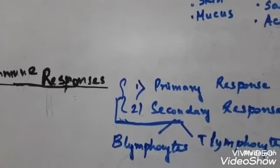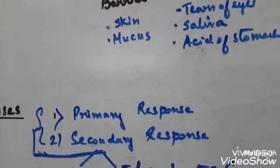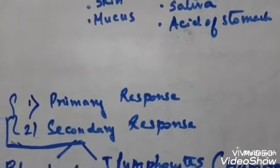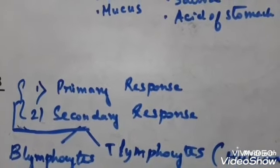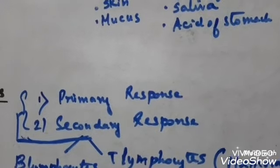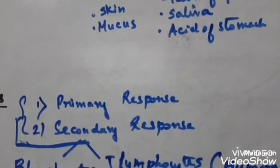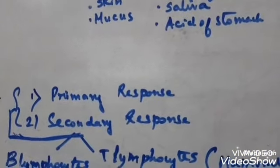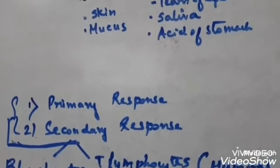The next topic is immune responses, which are of two types: primary response and secondary response. The primary response is generated when the body encounters a pathogen for the first time. The intensity is low at first, but after this primary response, the cell memory stores details of the encounter with the bacteria or pathogen.